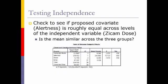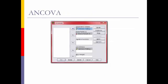We get the results and we want to see if alertness is equal across the dose groups. Looking at this one simple line: is the mean similar across the three groups? Alertness is not significant, so the means are equal and similar across the three groups. Therefore, we have met the independence assumption. Now let's go ahead and run an ANCOVA. We have our dependent variable - wellness rating - our fixed factor is dose, and our covariate is alertness rating. Note that post hoc tests are disabled in ANCOVA when you have a covariate, but we'll find a workaround.